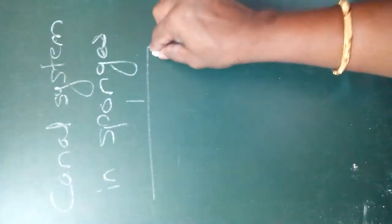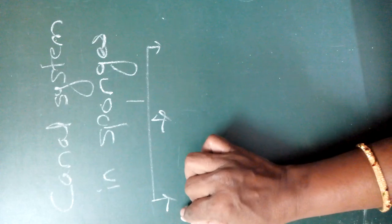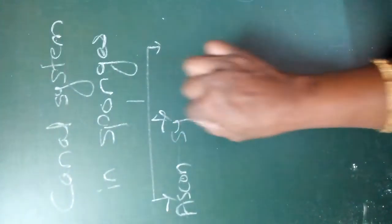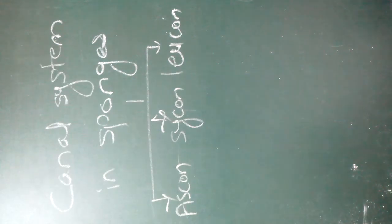In this video we will study the canal system present in sponges. The presence of a canal system is a characteristic feature of sponges. The canals transverse the wall of the sponge in a simple or complicated manner. There are usually three different types of canal systems observed in sponges: the first is the asconoid type, the second is the syconoid type, and the third is the leuconoid type.